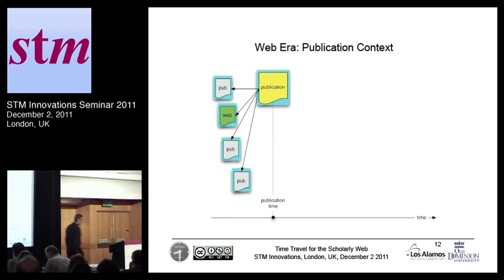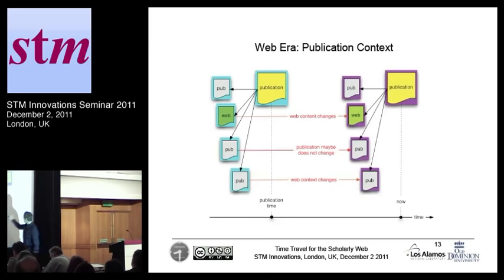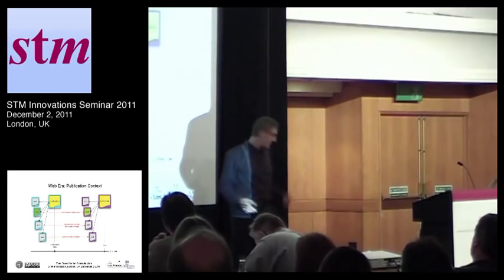As time goes by, that stuff actually evolves. Maybe the publication as such remains stable, but the context surrounding these publications is kind of changing. And so that basically means that sometime after the publication, it becomes impossible to reconstruct the version of record, when you consider the context surrounding the publication to be part of the record.